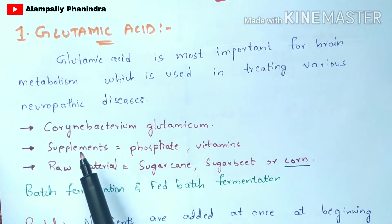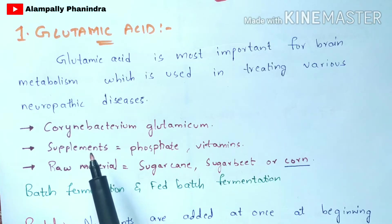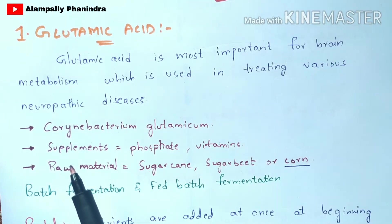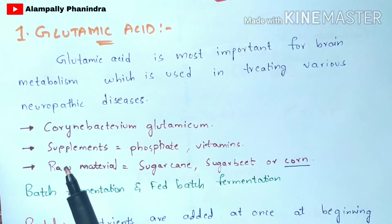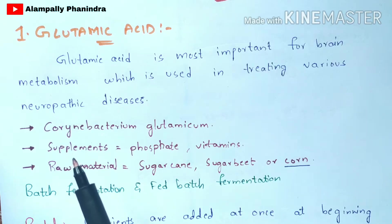The supplements added during fermentation are phosphate and vitamins, which come under the classification of nutrient medium. In the fermentation video I explained detailed information about this nutrient medium, so once you see that, you can understand what nutrients are present in the nutrient medium.